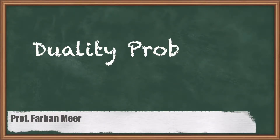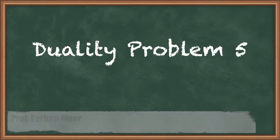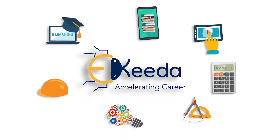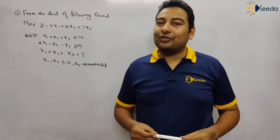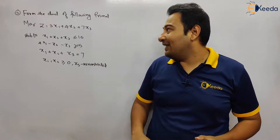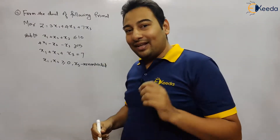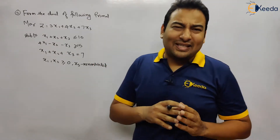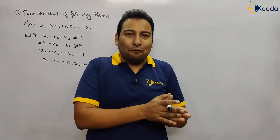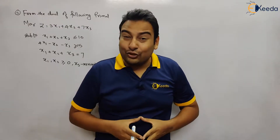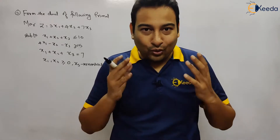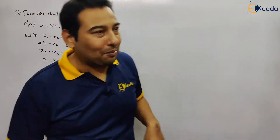Hello friends, in this video we'll be discussing problem number five on duality. This problem involves finding both equal-to as well as unrestricted variables, so this is basically a combination of problem number three and four. Before watching this video or going ahead, you should be very clear with problem number three and four. Let us move on with problem number five.